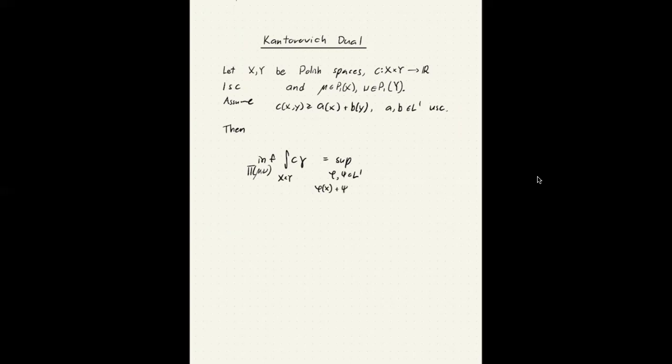The sum should be less than or equal to the cost function. They should satisfy actually the same inequality as A and B does up here. For all X and Y. And the target function here is just the integral of phi with respect to mu plus the integral of psi with respect to nu.